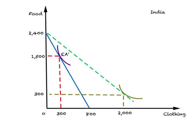Looking at the reproduced diagram for India with international trade: first, because we have the constant cost principle, India completely specializes in the production of food and produces nothing of clothing. Second, the community indifference curve is further from the origin relative to autarky, which means Indians are much better off with foreign trade than without it.